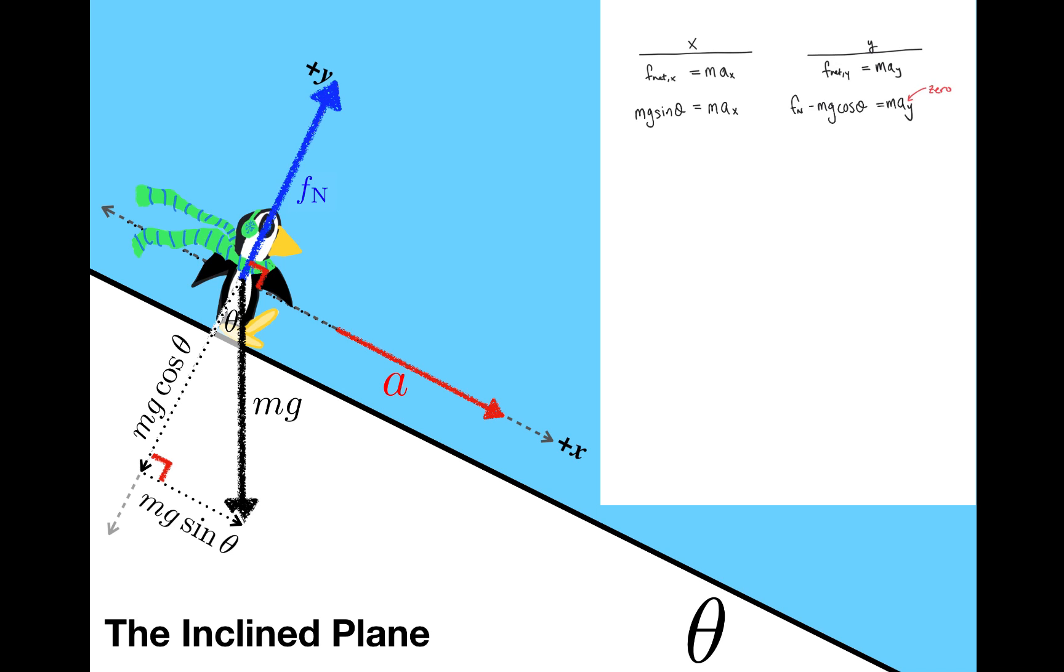Making that substitution and rearranging, fn is equal to mg cosine theta. In the x direction, there's an m on both sides of the equation, so I'll get rid of them. So ax is equal to g sine theta.